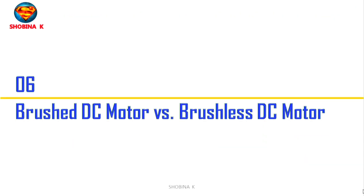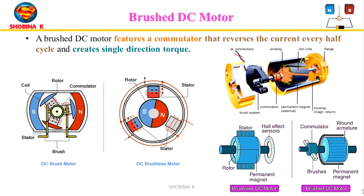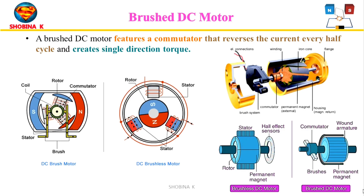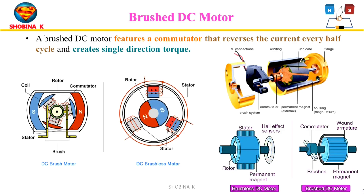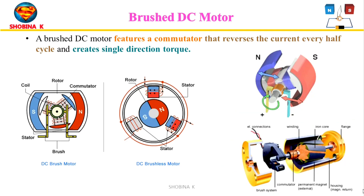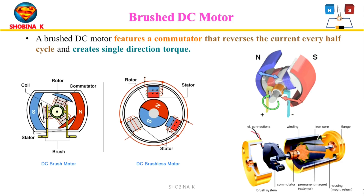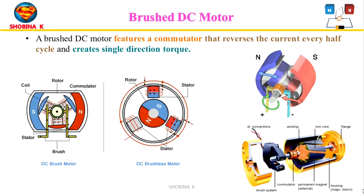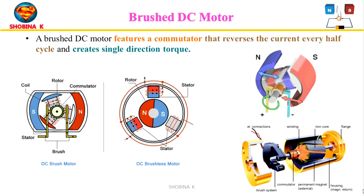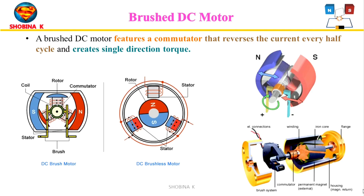A brushed DC motor features a commutator that reverses the current every half cycle and creates a single direction torque. It is an internally commutated electric motor designed to run from a DC power supply, utilizing electric brushes for contact. It has permanent magnets inside its outer body as the stationary stator, and the rotating armature contains an electromagnet as the rotor. In a brushed DC motor the rotor spins 180 degrees when electric current is applied to the armature; to travel beyond that the poles of the magnet must flip, and flipping the magnetic field enables the rotor to spin 360 degrees.